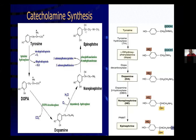Regarding catecholamine synthesis: tyrosine is the main amino acid that forms DOPA, and DOPA becomes dopamine through DOPA decarboxylase. Recall that levodopa is given with carbidopa, where carbidopa inhibits decarboxylase so more drug can reach the brain. Dopamine then converts into norepinephrine, and PNMT — phenylethanolamine N-methyltransferase — converts norepinephrine into epinephrine.